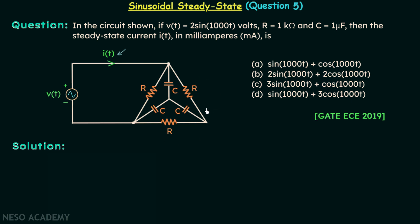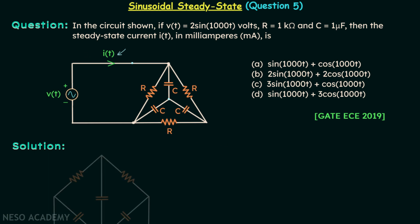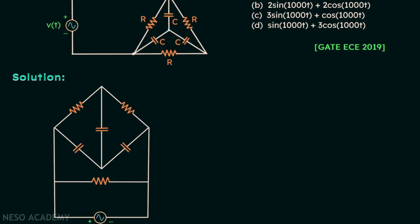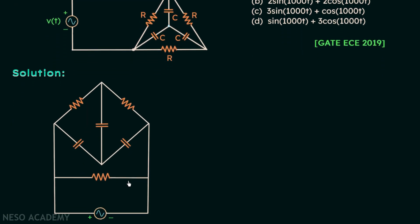To make you visualize it properly, I will shift this node of this resistor and move it here. I will pull this node and move it in this direction, then rotate the entire circuit in the anticlockwise direction. After doing all these changes, we have a rearranged circuit, and now you can clearly see that we have a bridge. I want to have this circuit in the frequency domain.